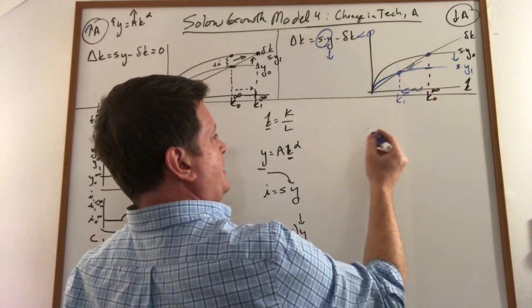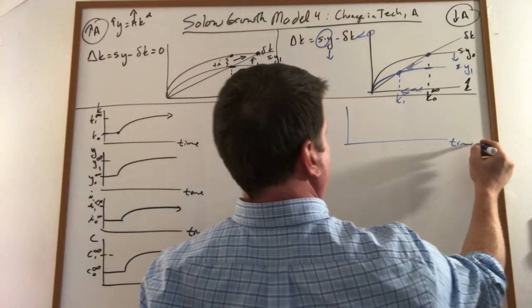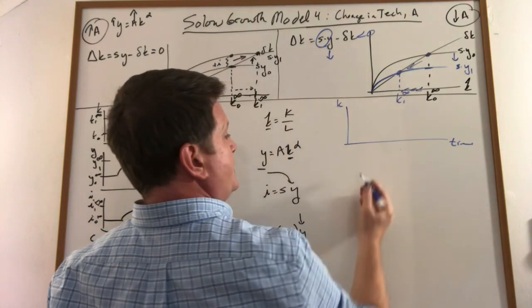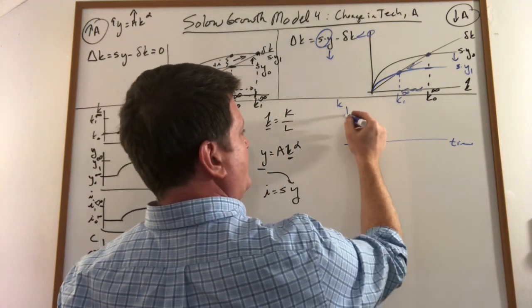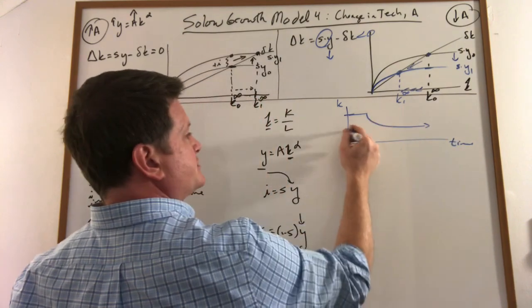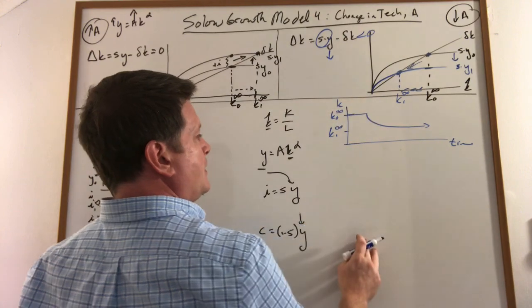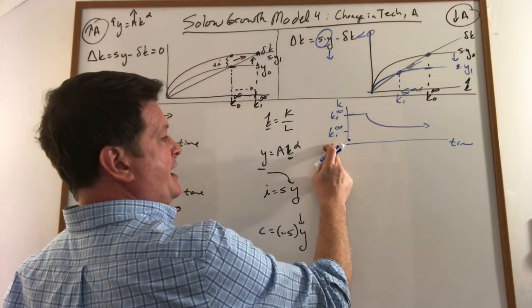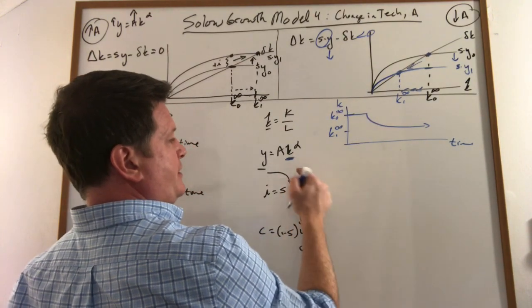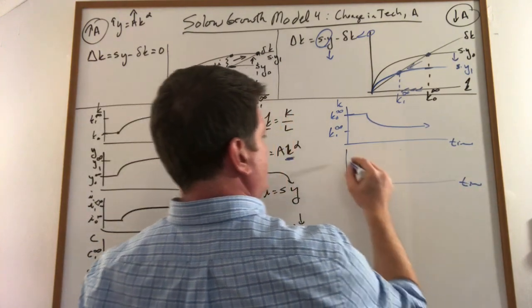So it slowly declines. If I look at this as a time path, if I put this over here, over time, I would see my capital stock decline until it reaches the new steady state. Because I know what happens to capital, I know what happens to capital here, and I can figure out what happens to GDP.